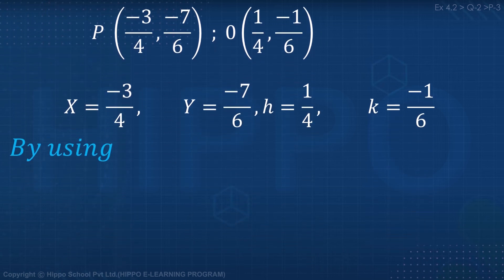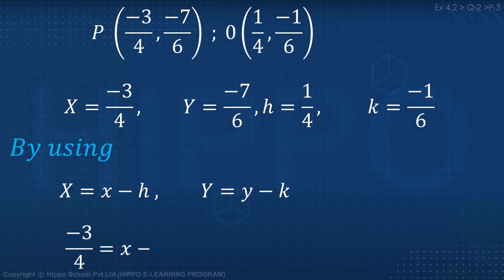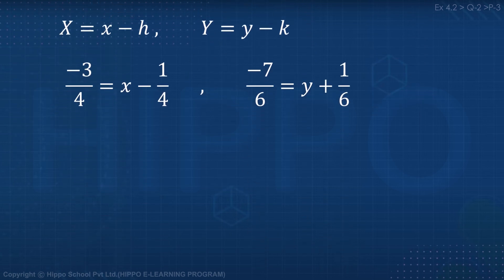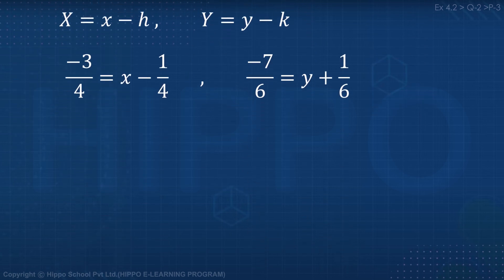By using which formula? Capital X equal to small x minus H, and capital Y equal to small y minus K. Putting values in: capital X is minus 3 by 4, equal to x minus H which is 1 by 4. And capital Y: putting in small K value, minus 7 by 6 equal to y plus 1 by 6.